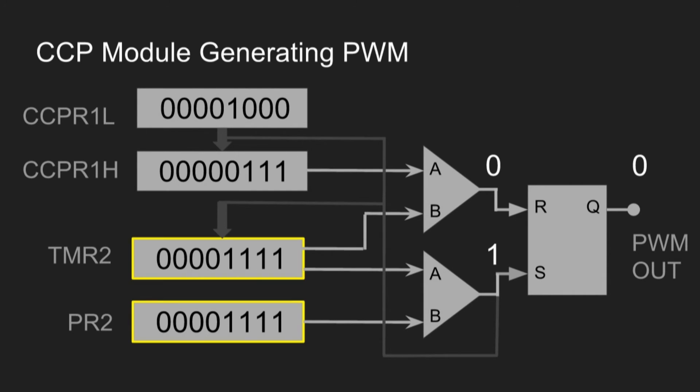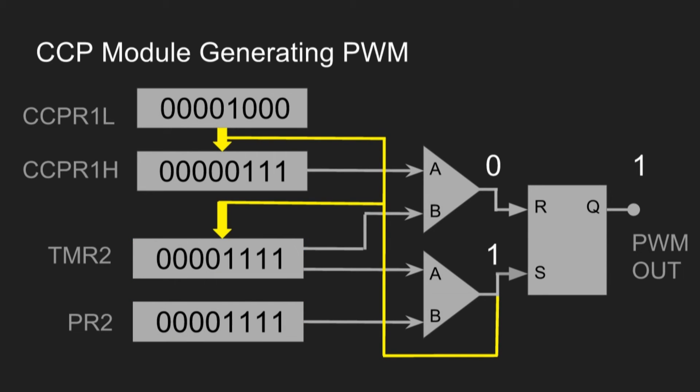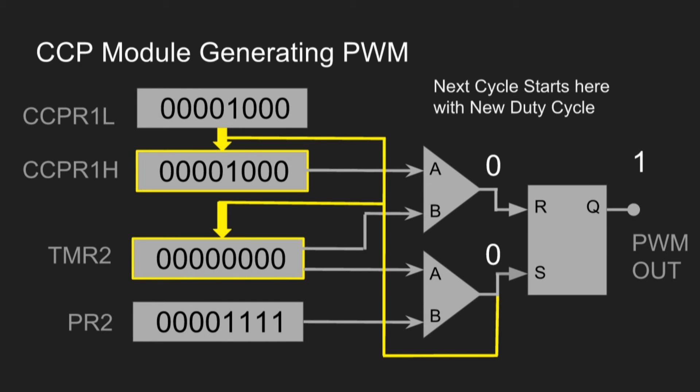When the TMR2 value becomes equal to the time period value the cycle resets and loads duty cycle from the CCPR1L register.